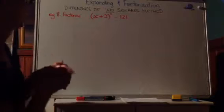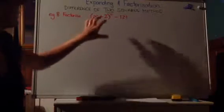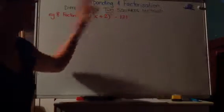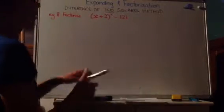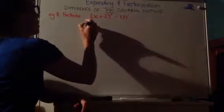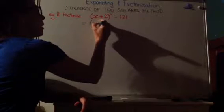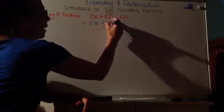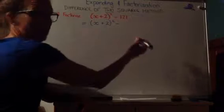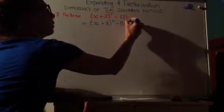You'll see up here I've got a factorise, and I've got a term squared subtract another term. I'm going to see if I can rewrite this in terms of two squares. Now this first bit is already in terms of two squares, so I'm going to leave that like this, and 121 is 11 squared.